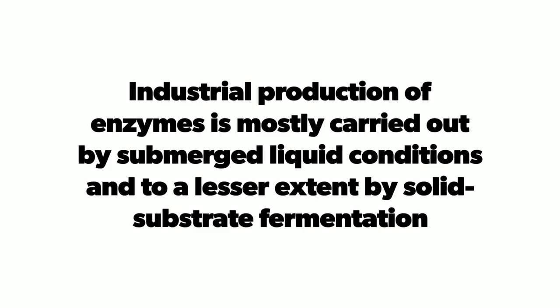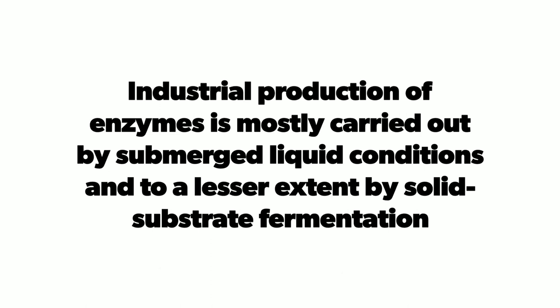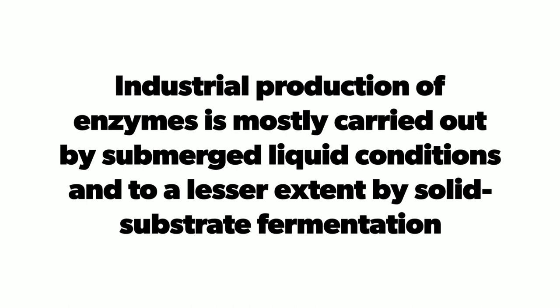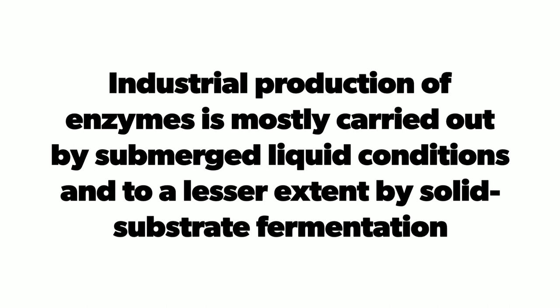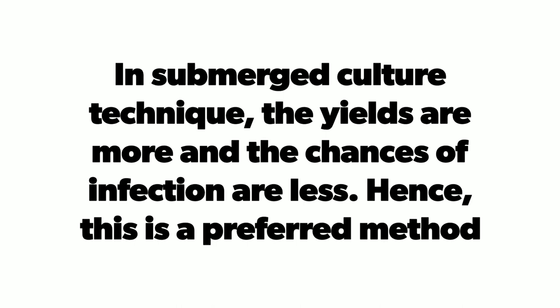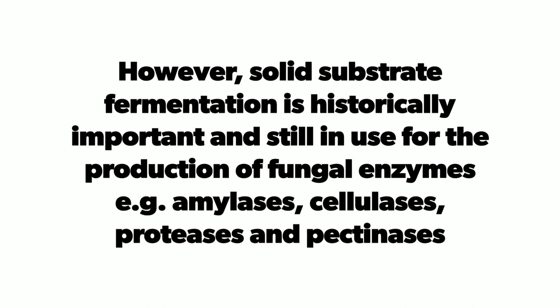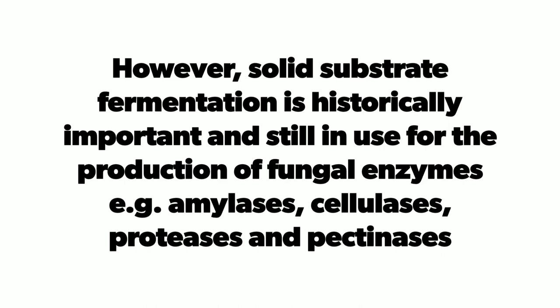Step three: production process. Industrial production of enzymes is mostly carried out under submerged liquid conditions and, to a lesser extent, by solid substrate fermentation. In submerged culture technique, yields are higher and chances of infection are less, hence it is the preferred method. However, solid substrate fermentation is historically important and still in use for the production of fungal enzymes such as amylases, cellulases, proteases, and pectinases.